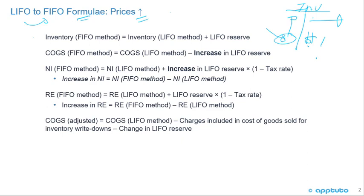Under LIFO — last in, first out — the more expensive inventory goes out first. So what's left behind under LIFO is our older inventory at the lower price, making it cheaper.